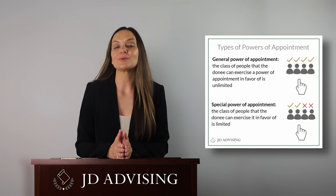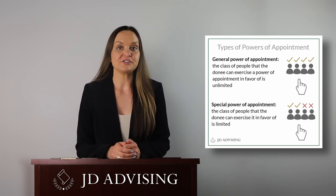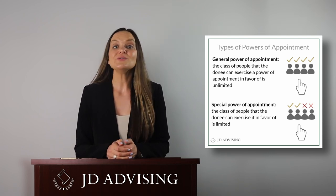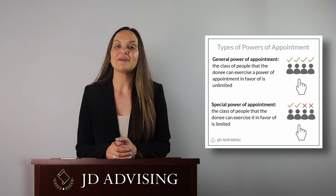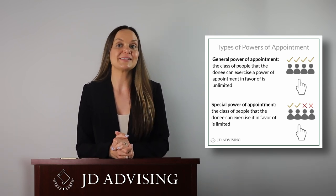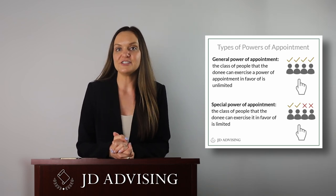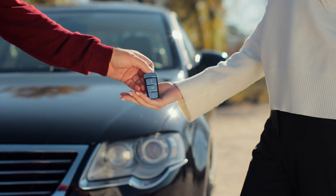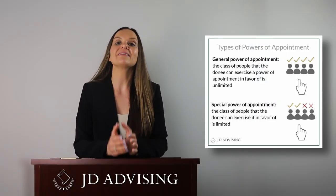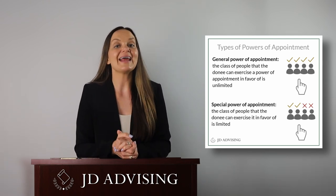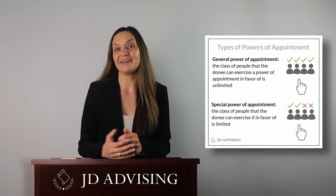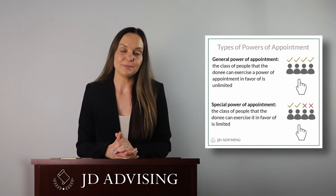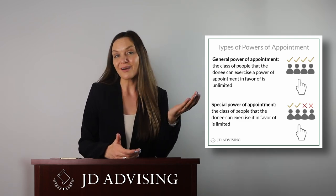Another highly tested issue is powers of appointment. When someone writes a trust or a will, they can give the beneficiaries the power of appointment, which allows the beneficiary to designate who will receive specific trust or estate property. There are two types. A general power of appointment provides for an unlimited class of people in favor of whom the beneficiary can exercise the power — for example, giving my husband the power to pick who gets my car, meaning he can pick anyone. A special power of appointment provides for a limited class of people. Appointments to impermissible appointees are deemed invalid. For example, if I give my husband the power to decide which of our two sons gets my car, that is a special power of appointment; if he chose to give it to the neighbor, that would be invalid.